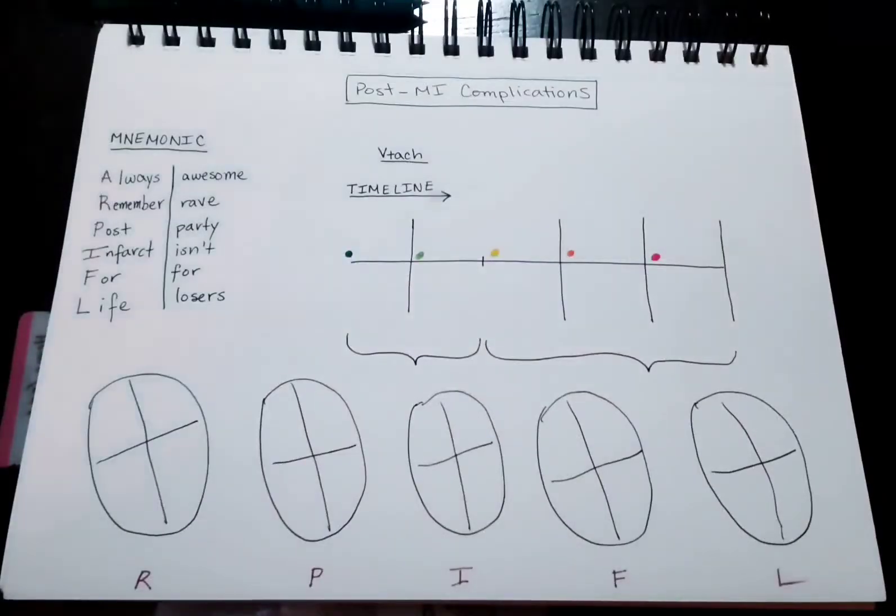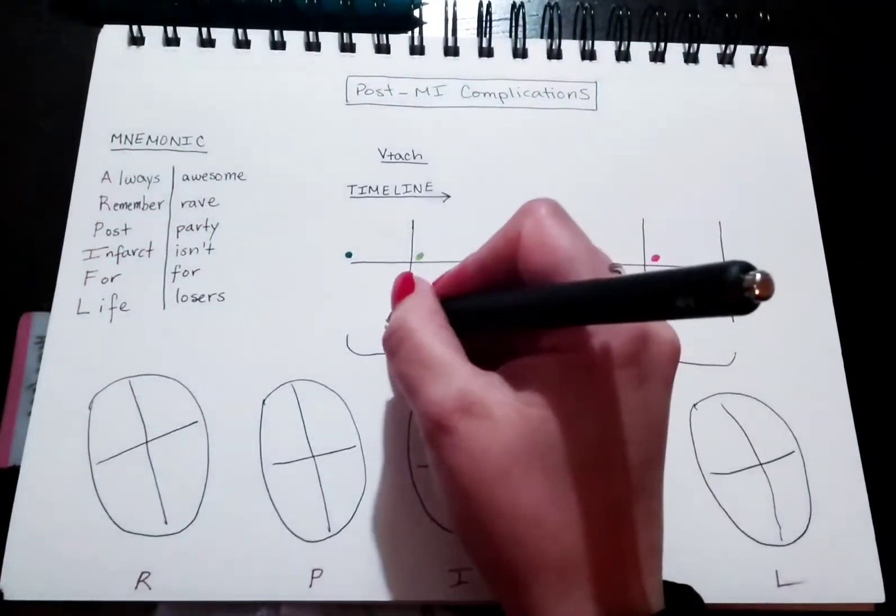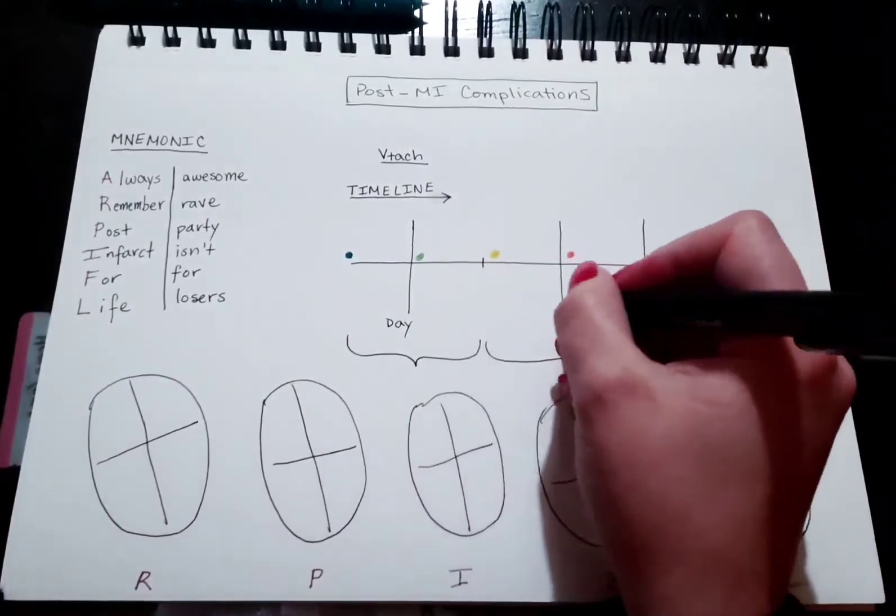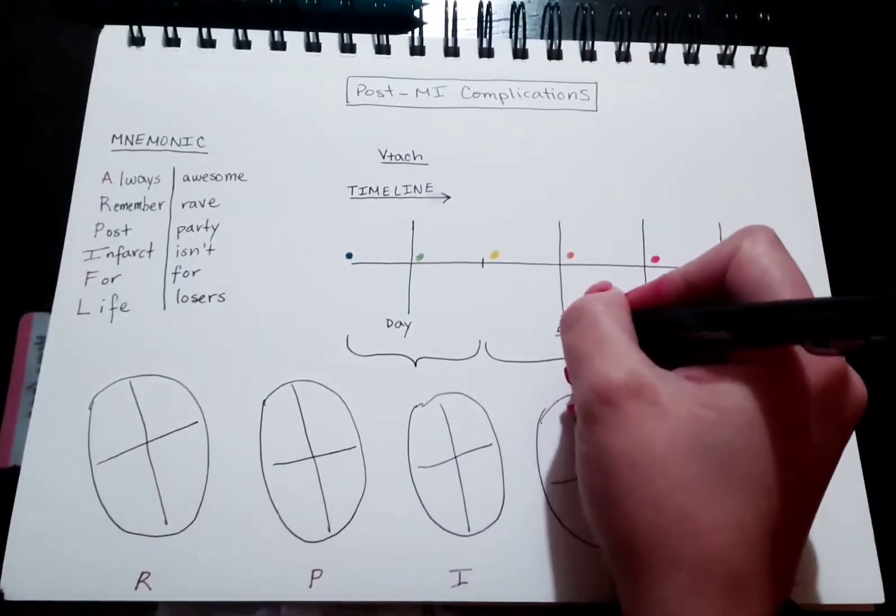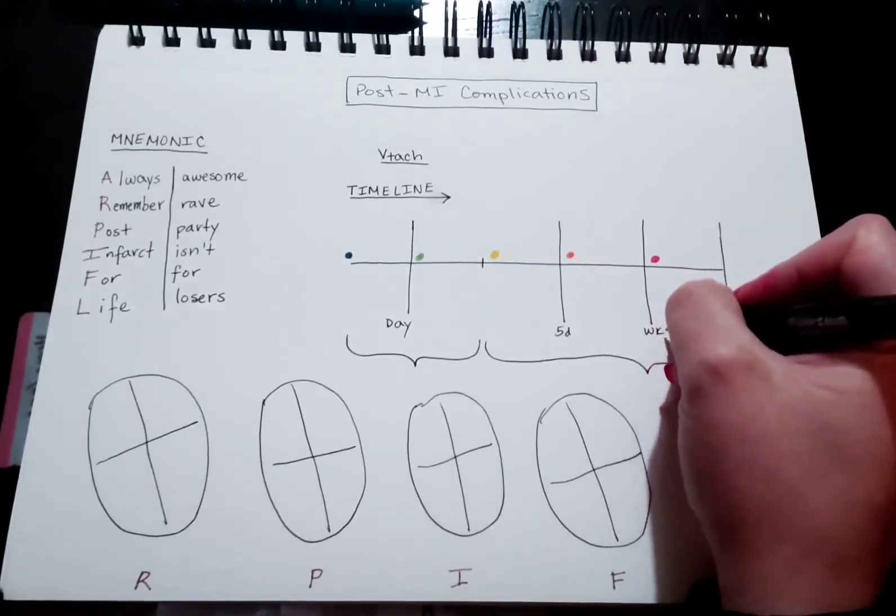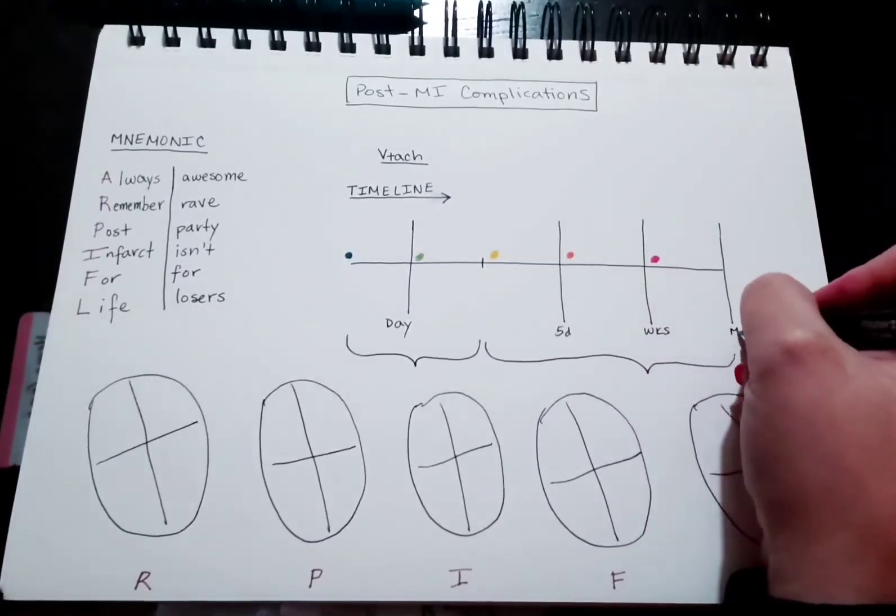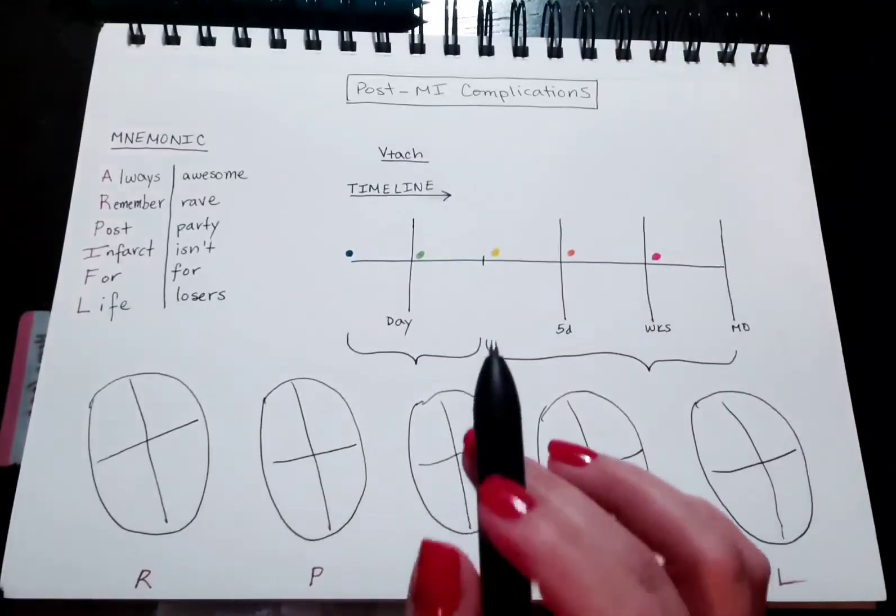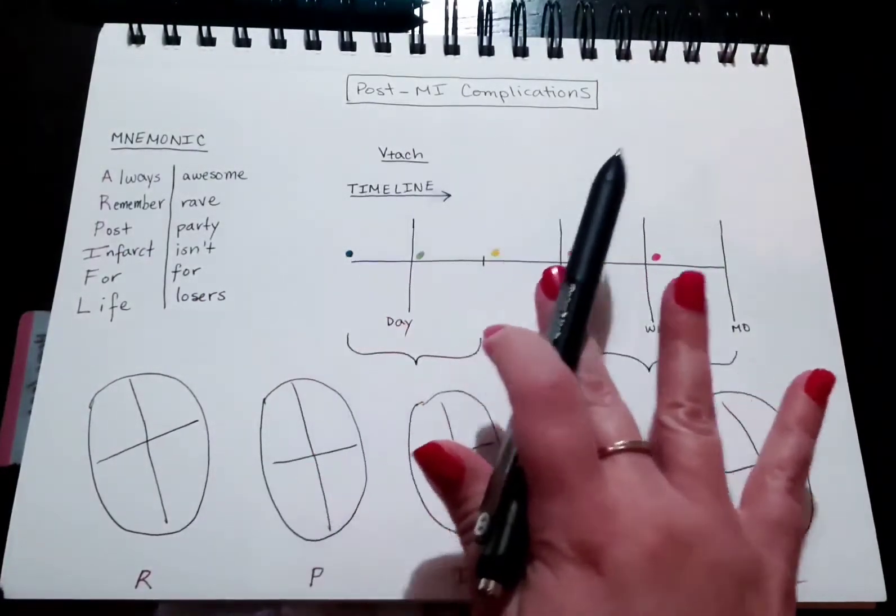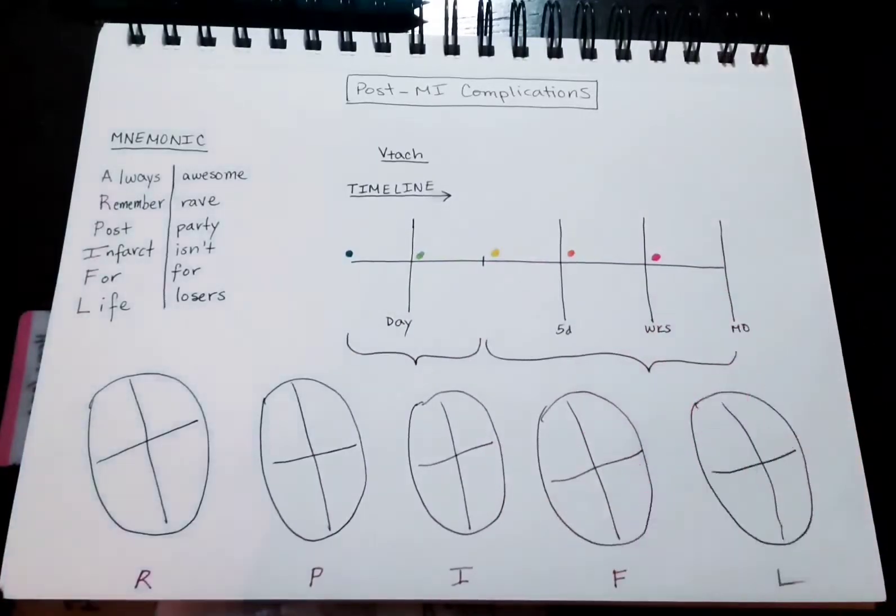So let's drift our attention now to the timeline and go ahead and label the points. This is just going to be a day, meaning 24 hours. Next is going to be five days. This is going to be weeks, and this is going to be months. For the next step, we're going to turn this mnemonic into the actual complications on the timeline.